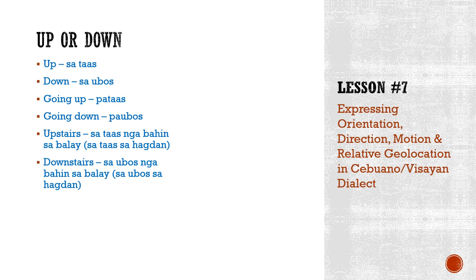Sometimes we don't say hagdan because we refer to the house as a whole — as if we're partitioning the house into two sections. So if I say upstairs meaning the upper portion of the house, we can translate that to sa taas nga bahin sa balay. Balay is house. Likewise, downstairs means the lower partition of the house.